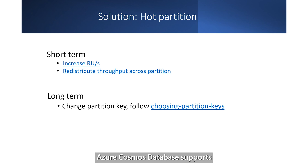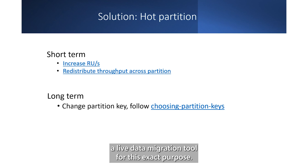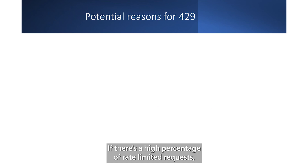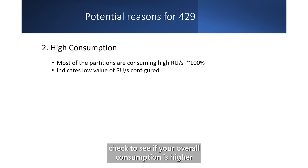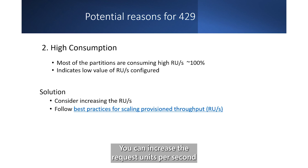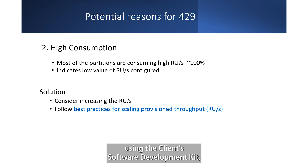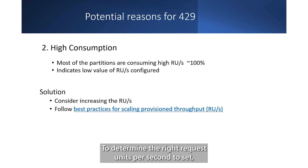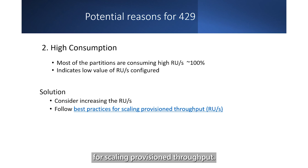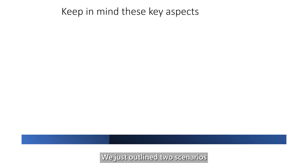Azure Cosmos Database supports a live data migration tool for this exact purpose. If there's a high percentage of rate-limited requests — greater than 5% — and no hot partition, check to see if your overall consumption is higher than the configured throughput using the same metrics. You can increase the request units per second on the database or container using the client software development kit, Azure Portal, PowerShell, CLI, or ARM template. To determine the right request units per second to set, follow our best practices for scaling provisioned throughput.